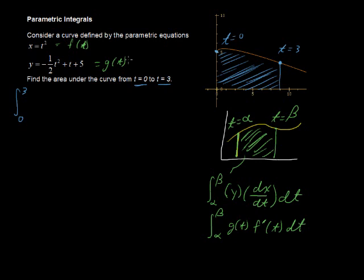And the integral of what? Well, it's the integral of the y function. That's this. So that's negative one-half t squared plus t plus 5 times dx dt.